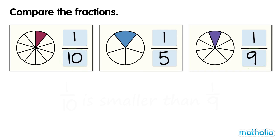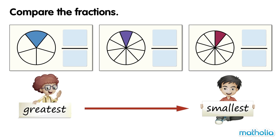Let's arrange the fractions from the greatest to the smallest. From the greatest to the smallest, the fractions are one fifth, one ninth, and one tenth.